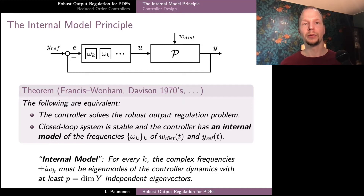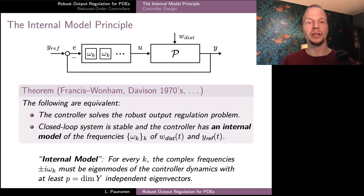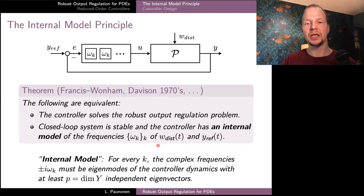There is a very nice and well-developed theory behind the robust output regulation problem which dates back to the 1970s, and one very standout result called the internal model principle, which characterizes all the dynamic error feedback controllers that can solve the robust output regulation problem. Stated in general terms, the internal model principle tells us that a particular dynamic error feedback controller solves the robust output regulation problem precisely if the controller stabilizes the closed-loop system, and in addition the controller has a so-called internal model of all of the frequencies in our reference and disturbance signals.